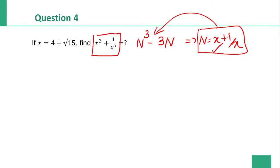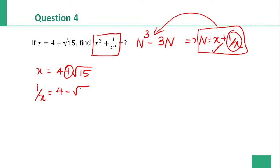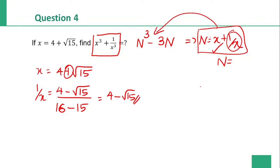x is equal to 4 plus root 15. 1 by x: 4 minus root 15 divided by 4 square, which is 16, minus root 15 square, which is 15. So 4 minus root 15 — this is the value of 1 by x. x plus 1 by x: 4 plus root 15 plus 4 minus root 15. Plus root 15 minus root 15 cancel. So 4 plus 4 is 8.